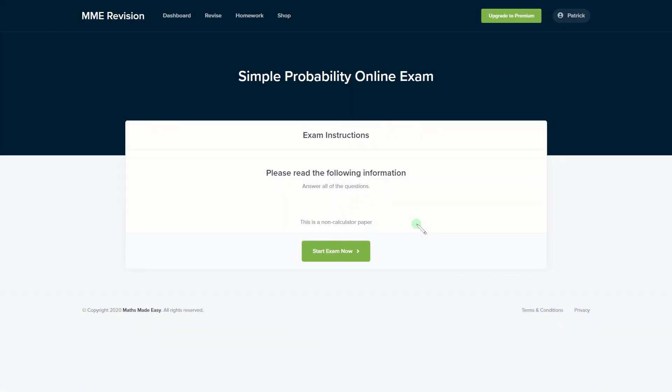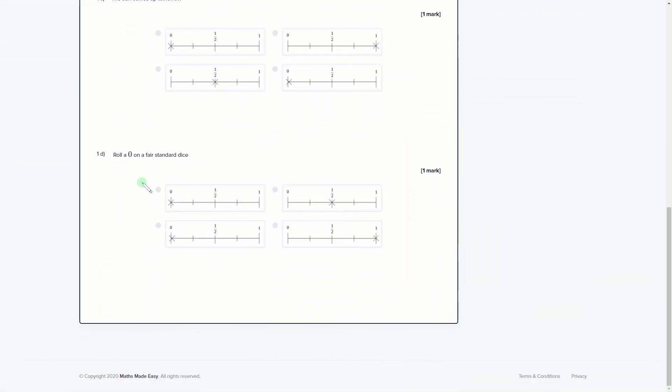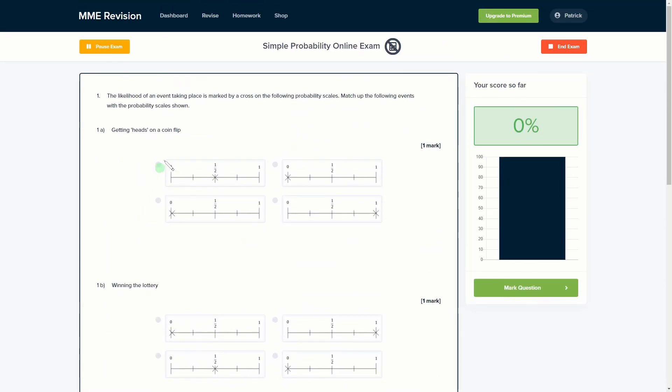If you feel ready to tackle some probability questions, then why not have a go at our online exam? It's available through our revision platform. If you take the test, you'll find loads of different questions, a variety of different question types, and you get instant feedback on all of them. You can keep track of your progress, find out where you need to improve, and so on. If you're interested, click the link below and it will take you straight over there.